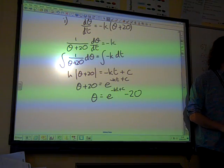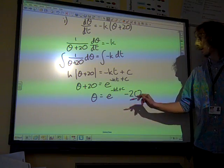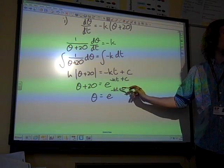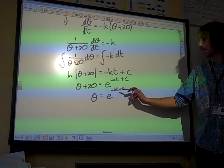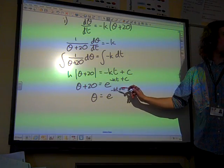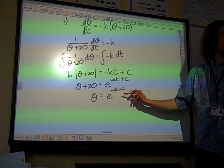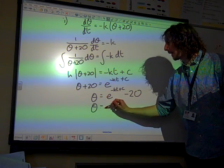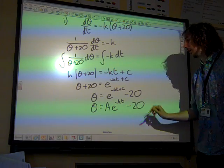Or, as is often the case in this kind of question, it might be convenient for us to think about the c bit, the constant of integration, as being, if this is -kt + c, this means it's e^(-kt) × e^c. Because you'd add the powers. So we can write this as being Ae^(-kt) - 20.